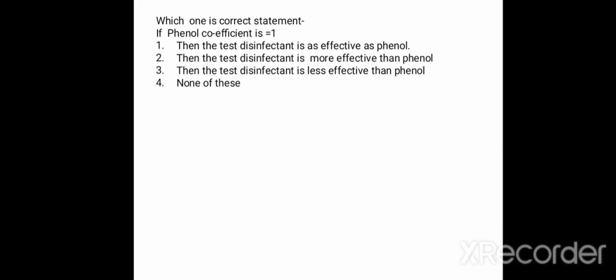Which is the correct statement? If phenol coefficient is 1 — Option 1: the test disinfectant is as effective as phenol. Option 2: the test disinfectant is more effective than phenol. Option 3: the test disinfectant is less effective than phenol. Option 4: none of these. The correct answer is Option 1 — if phenol coefficient is 1, the test disinfectant is as effective as phenol; their effectiveness is the same.